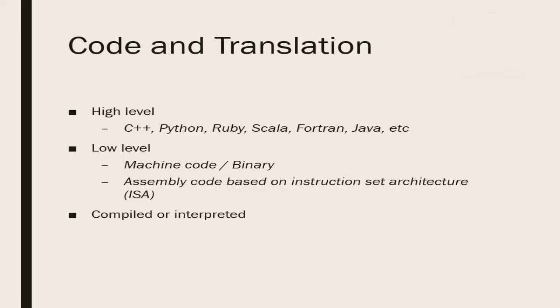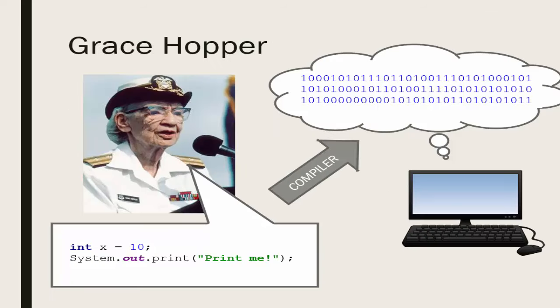We would struggle to write code in binary, which is why a wonderful woman named Grace Hopper did all of us a favor in inventing the compiler. With a compiler, we can write our code in a form that resembles English. It still has patterns and rules which must be obeyed, but the code is readable to us.